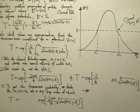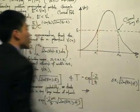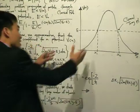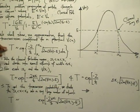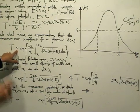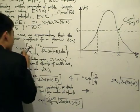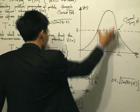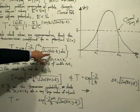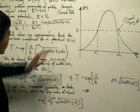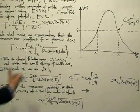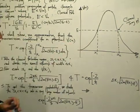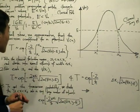We want to show how to use these results to approximate the transmission coefficient for this general potential barrier. Via approximation, the transmission coefficient for a potential like this is proportional to the exponential of minus 2 divided by ℏ, integrated from x₁ to x₂ — covering the classically forbidden region — of the square root of 2m times (V(x) minus E), integrated with respect to x. This is called the WKB approximation.